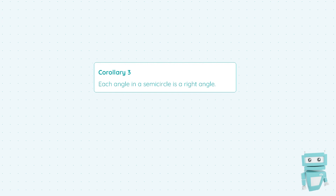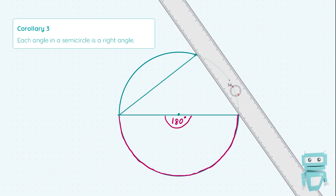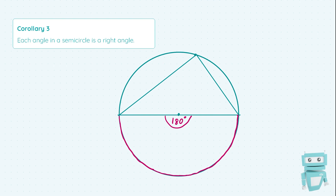Moving on to Corollary 3: this states that each angle in a semicircle is a right angle. If we draw a circle and divide it in two, consider the arc in question — this pink arc along the outside. The angle created by joining this arc to the centre is simply 180 degrees. Just because the angle at the centre is a straight line doesn't mean the theorem isn't true — we can join the points on either side of the circle to any other point on the circle, and this angle created is always going to be 90 degrees.